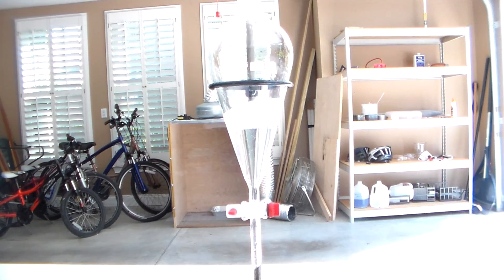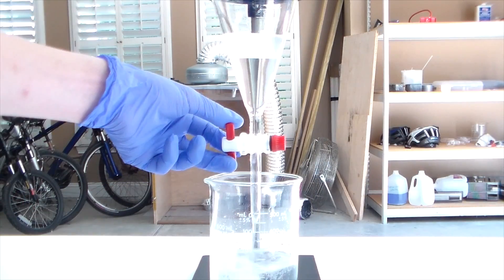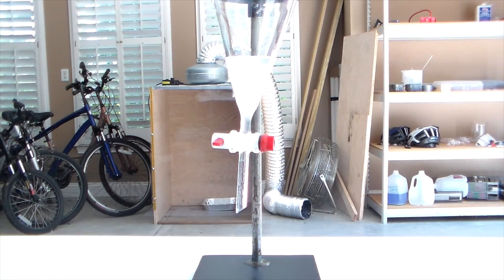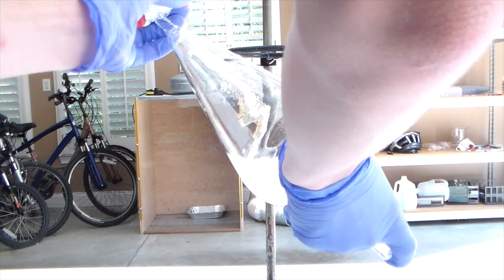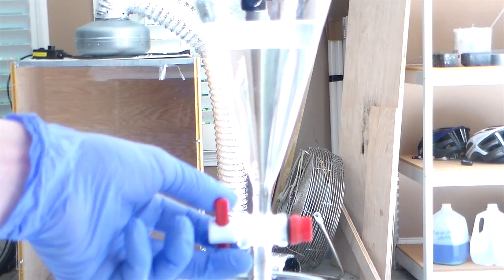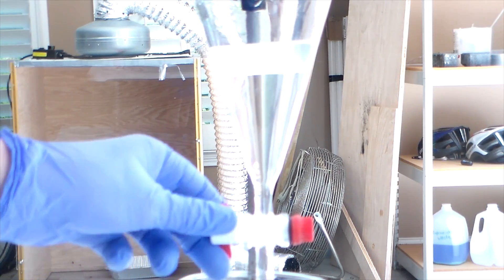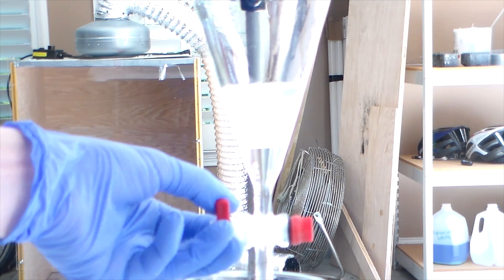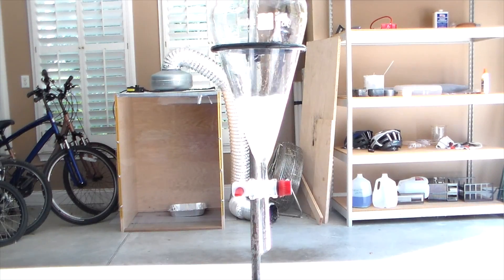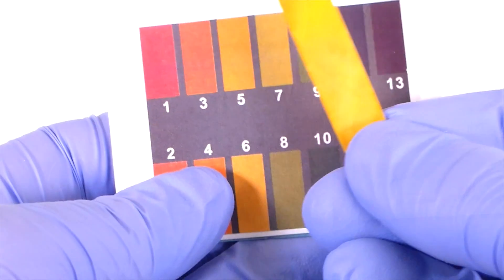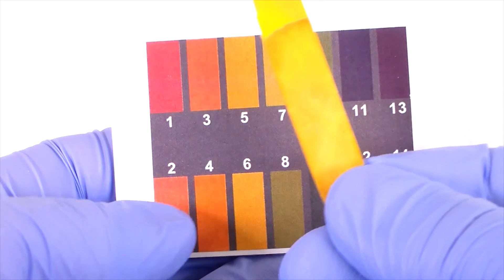After shaking, allow these layers to separate and then discard the lower aqueous layer. Now repeat that washing process, but this time using distilled water. Once again, drain off the lower layer and retain the upper layer which contains our product. Repeat these water washes until the product reaches a neutral pH as judged by litmus paper.